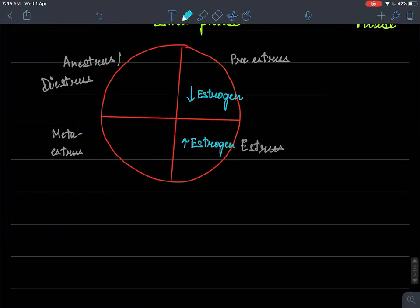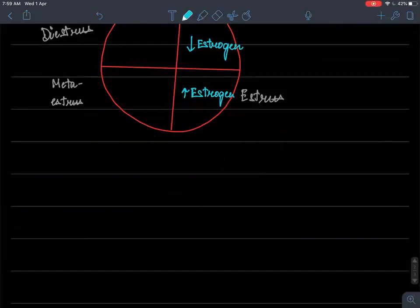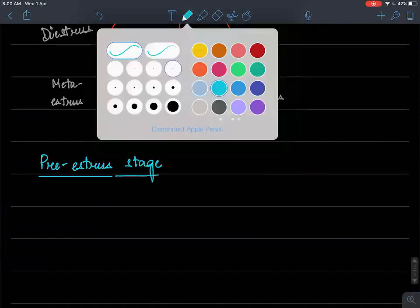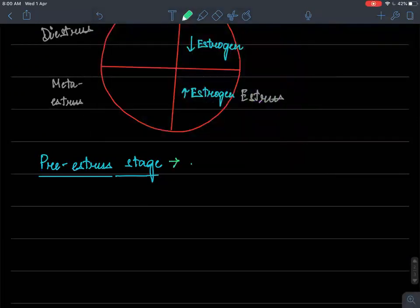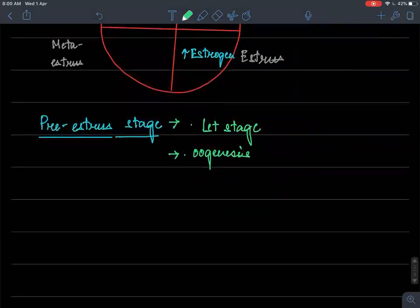Now let's look into the changes that is happening during each period of time. So first of all, we are going to look into pre-estrus. Pre-estrus stage includes the first stage where oogenesis starts in the ovary. There is low level of estrogen during this period of time.